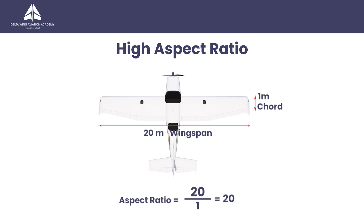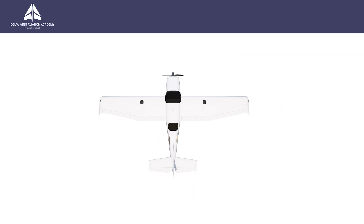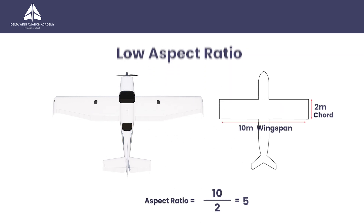This is an example of a high aspect ratio wing. A wing that has a 10 metre wingspan and a 2 metre chord has an aspect ratio of 5. This is an example of a low aspect ratio wing.